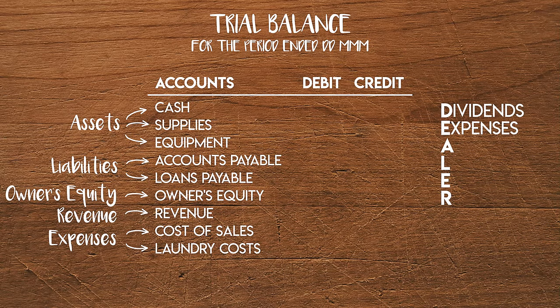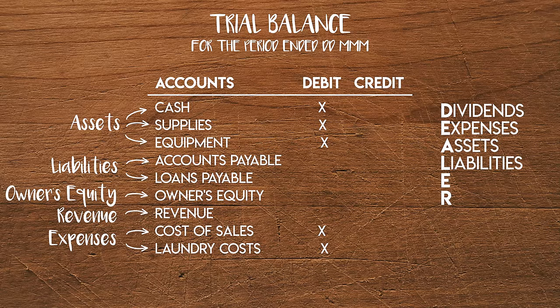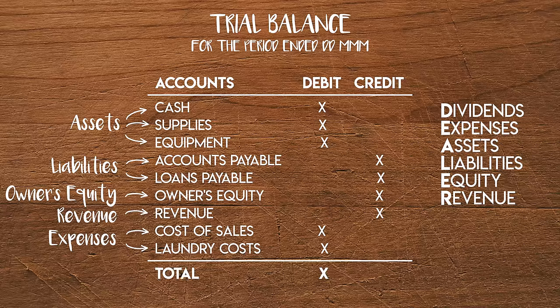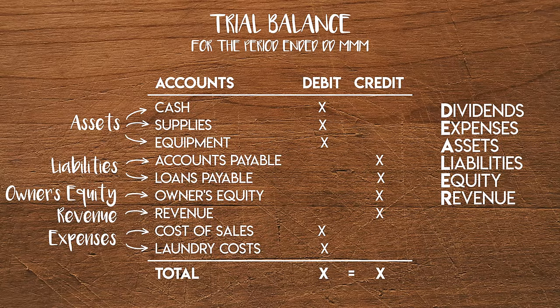The columns that account balances go in usually line up with the normal balances of the account types, which we can remember using DEALER. Dividends, expenses and assets are normally debit accounts so these go on the left, whereas liabilities, owners equity and revenue are normally credit accounts which go on the right. The totals of the debit and credit columns should always match each other. If they don't then you'll need to check over your workings for errors, since we're using double entry bookkeeping where total debits and credits are always equal.